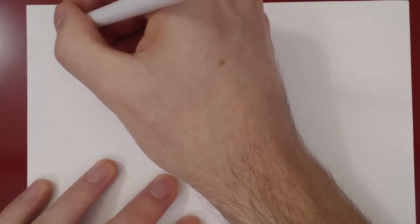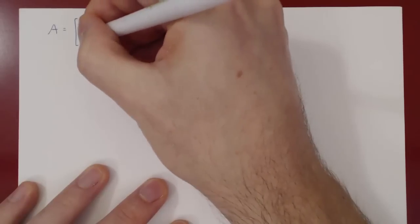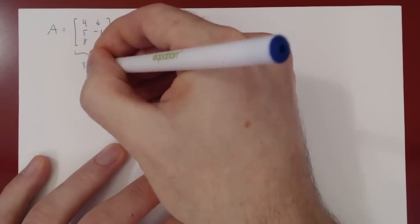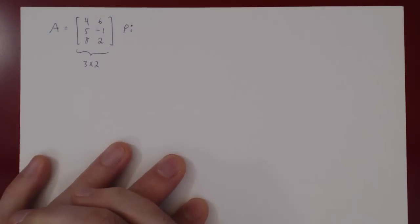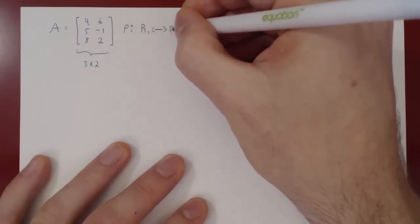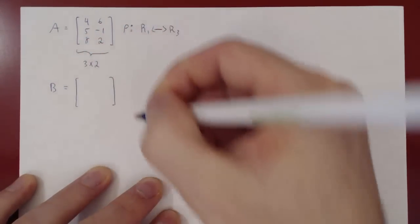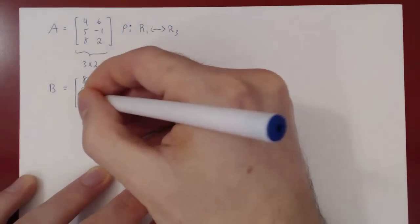Let's do one more example. Suppose A is now a 3×2 matrix: [4, 6; 5, -1; 8, 2]. Let's apply the row operation: swap row 1 with row 3. We copy the second row unchanged, and swap the first and third rows, giving B = [8, 2; 5, -1; 4, 6].